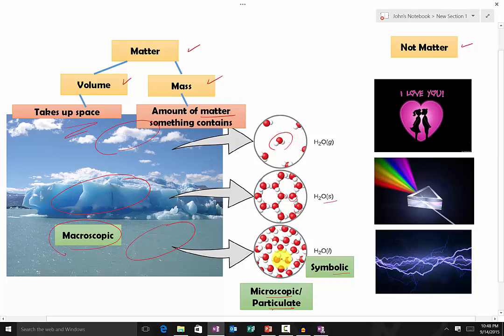And lastly, the symbolic view is basically we use numbers and letters to represent a substance. For instance, water is H2O in gas form. Or we have the glacier, which is water in the solid form right here. And lastly, we have the water in the liquid form.